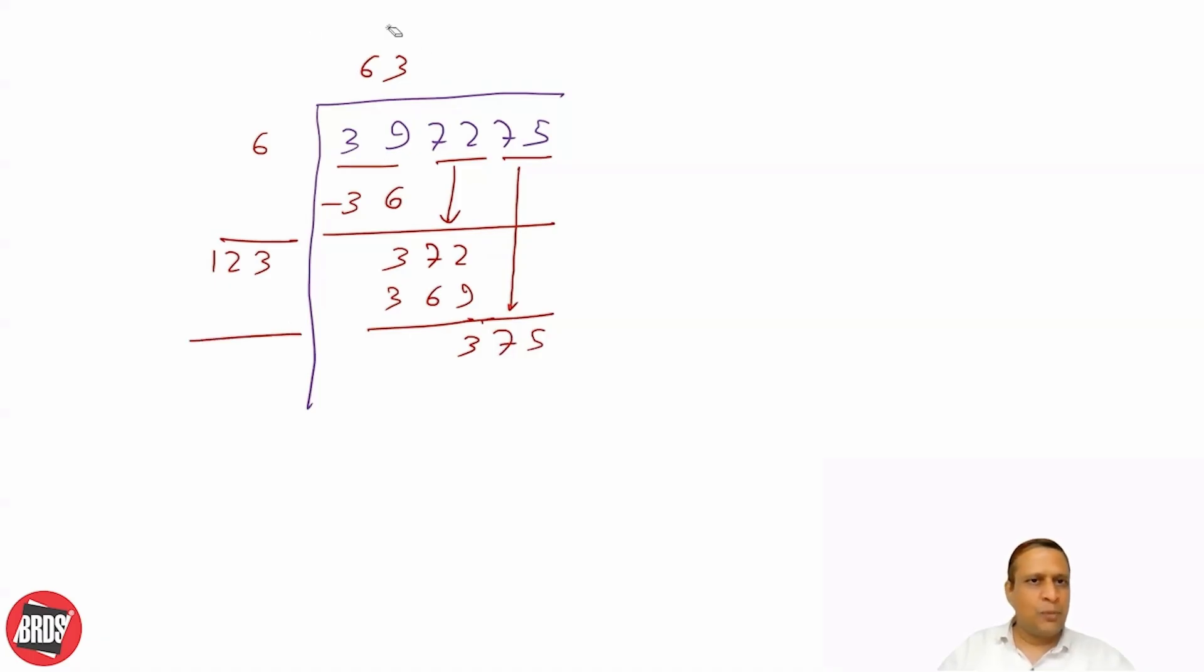Now double 63, which is 126. You cannot do anything with 126 because even 1261×1 will be more than 375, so it will be zero. The approximate square root of this number is 630.